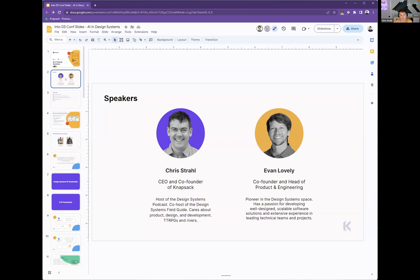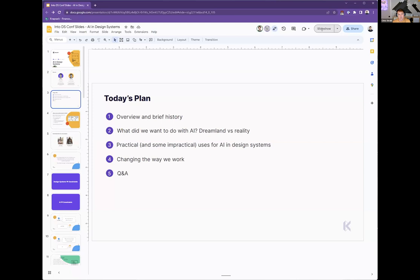A quick look at what we're going to cover: a brief history of this concept, what we want to do with AI and what our dreamland looks like, then the reality of practical implementation, and how this deeply relates to design systems — how it actually impacts our work.